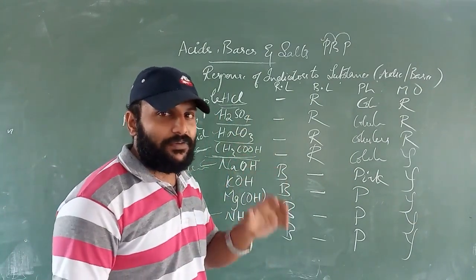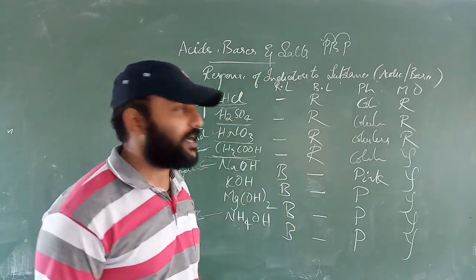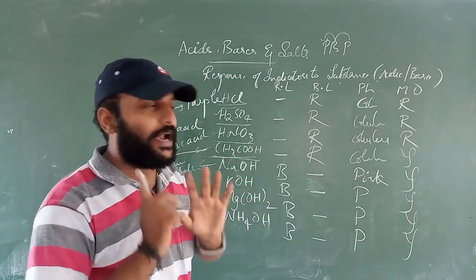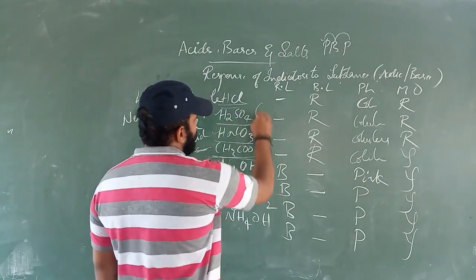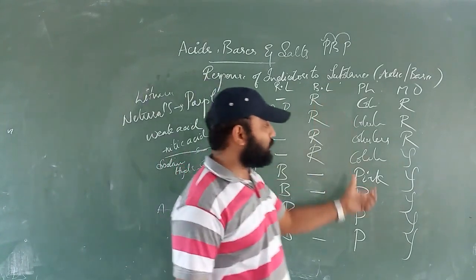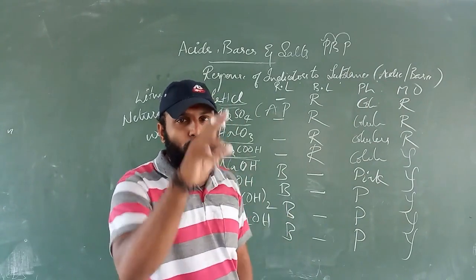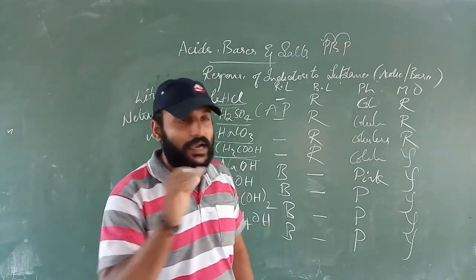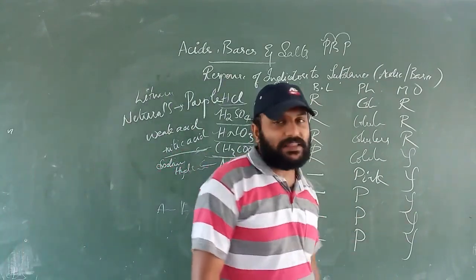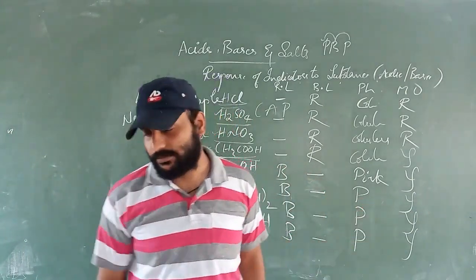So we have clearly understood how indicators show a change in color for acids and bases. For acids: red litmus — no change; blue litmus — turns red; phenolphthalein — colorless; methyl orange — red. For bases: red litmus — turns blue; blue litmus — no change; phenolphthalein — pink; methyl orange — yellow.